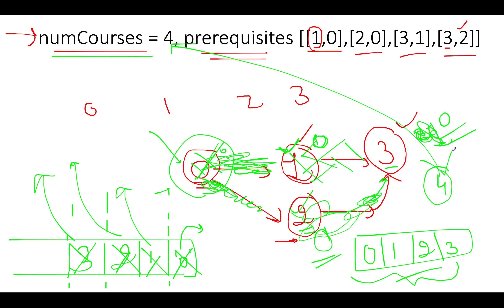So we used the indegree array for the computation of toposort with BFS traversal. Toposort is not that difficult — it's just keeping track of which nodes should be added into the BFS queue using the indegree array. It's just a slight flavor of BFS traversal. If you have any doubts about the approach, don't worry — it will be crystal clear in the coding section.